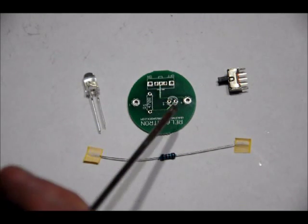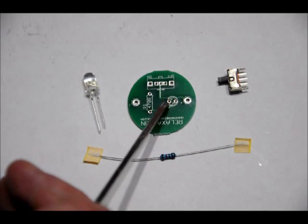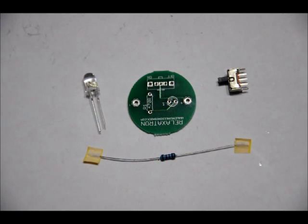So, again, long lead on the right for the LED, short lead on the left. Solder those into place and then I'll show you how to place the battery connector.